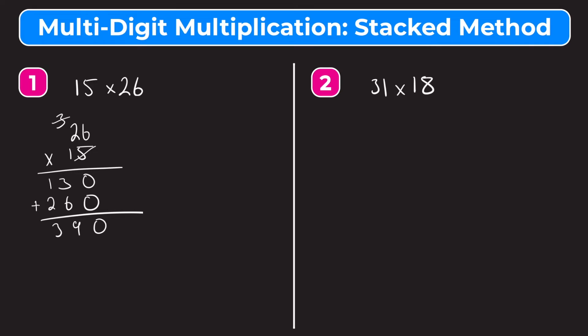Let's try example 2. We have 31 times 18. Let's rewrite this in the stacked method. Our larger number is 31, so we put that on top, times 18. Remember, we're essentially doing 8 times 31 and then 10 times 31. So 8 times 1 is 8 — put the 8 directly below. Then 8 times 3 is 24. We can write the 24 since there's no place to the left of 31 to carry.